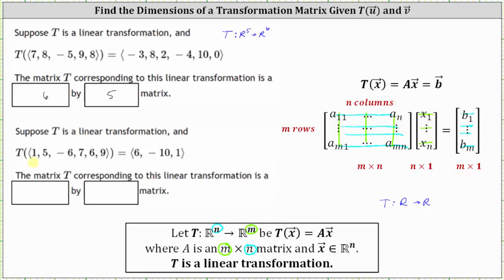For the second example, notice the input vector has six components and the output vector has three components. This linear transformation is a mapping from R6 to R3. All the input vectors, or vectors in the domain, have six components, and therefore the vectors can be written as six by one column matrices. And all the vectors in the co-domain or output are in R3, which can be written as three by one column matrices.